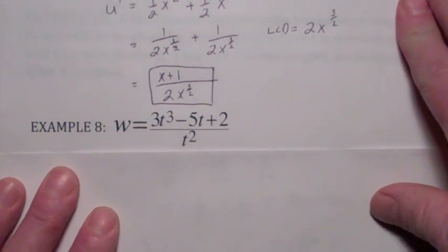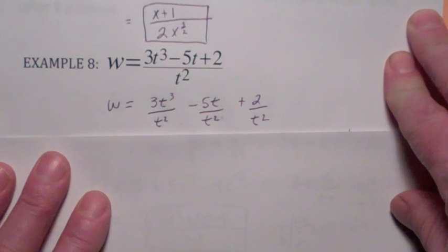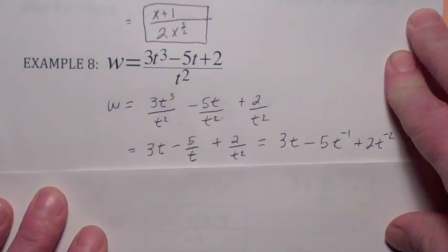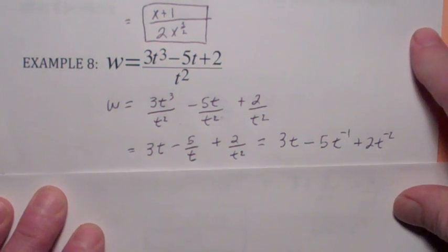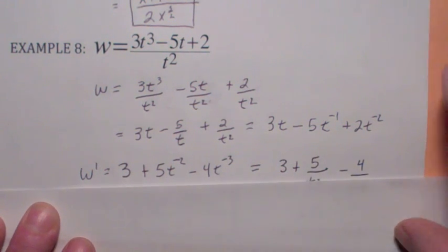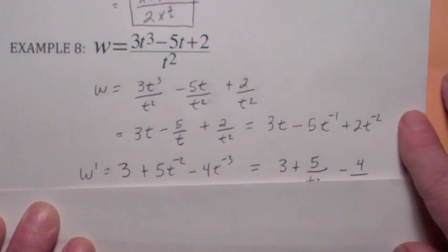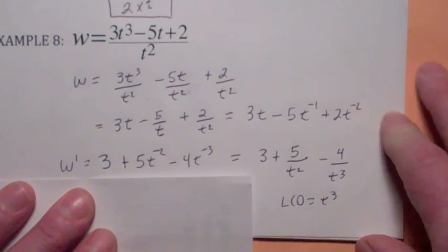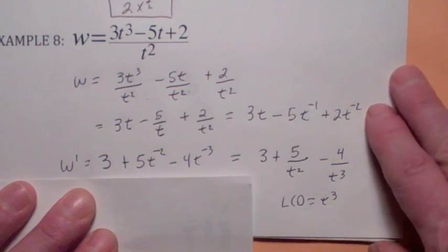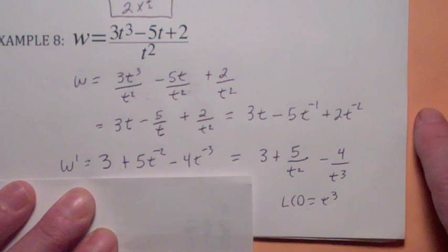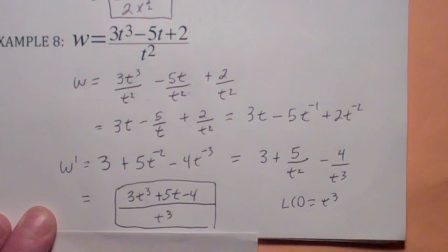For this last example, we don't have a quotient rule yet, so the trick is to divide every term by t squared. When you simplify, then bring the exponents up to the top as negative exponents, you're set up for the power rule again. Applying the power rule gives 3 plus 5t to the negative 2 minus 4t to the negative 3. Get rid of the negative exponents, then find the LCD, which is t to the 3rd. Your final answer becomes (3t³ + 5t − 4) over t³.